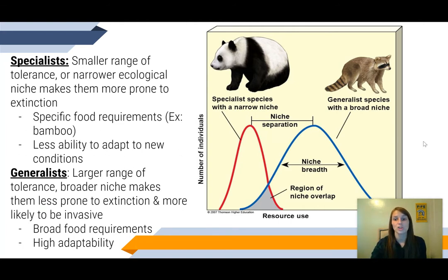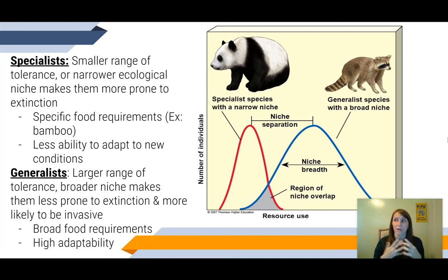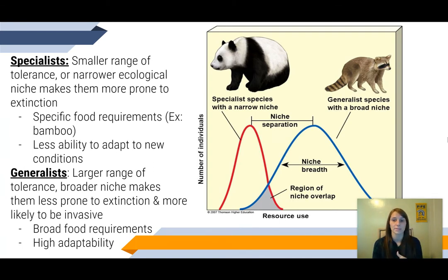This is going to be compared to a generalist species. Generalist species have a larger range of tolerance because they have a broader niche, and this makes them a lot less prone to extinction. They're also able to be invasive — they can come into an area and thrive and take over some of the organisms that had already been there. This is because they have broad food requirements and a very high ability to be adaptable.